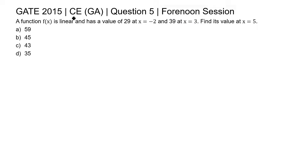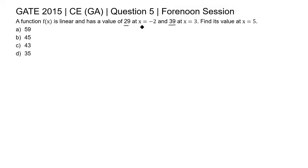This is question 5 of the Civil Engineering General Aptitude section of the 2015 GATE exam. A function f(x) is linear and has a value of 29 at x equal to minus 2, and 39 at x equal to 3. We need to find its value at x equal to 5. A linear function is given with two values for two different x values.